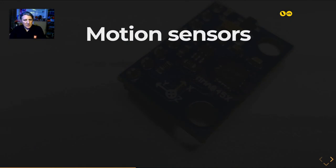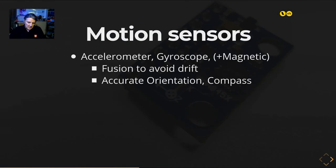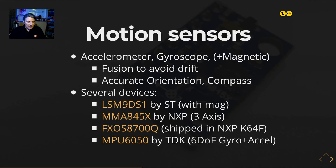Motion sensors are sometimes a combination of accelerometer, gyroscope, and optionally a magnetic sensor, with sensor fusion to avoid drifting. You can use this to get the accurate position of your thing and also use it as a compass. There are several motion sensor devices — some are more accurate than others. You can measure orientation in some directions but not all — for example, below gravity it won't work as expected, so choose the right sensor for your use case.